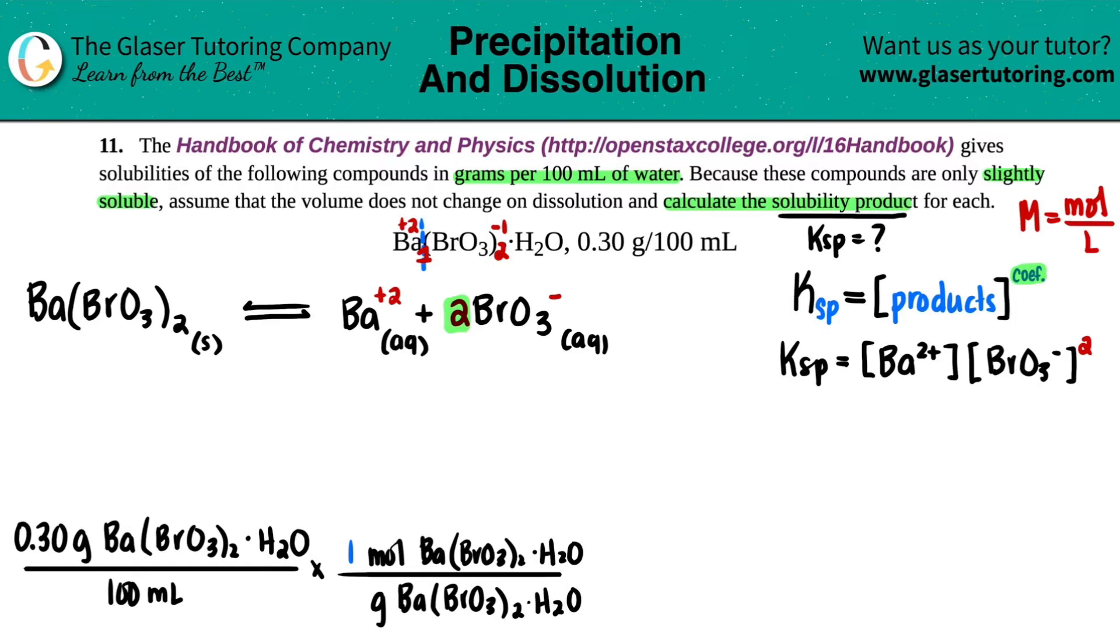So Ba 137.3 plus two bromines, two times 79.9 plus six oxygens, six times 16. And then I have two hydrogens, so that times two. And then I have one more oxygen, so plus 16. So that's 411.116 grams. Cancel all the grams. And we have mole.